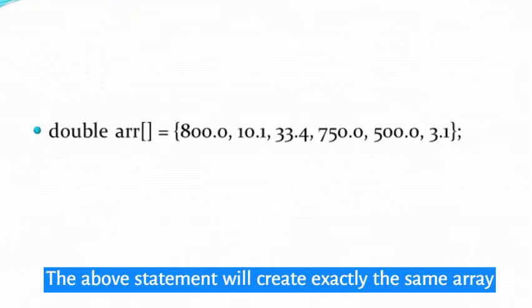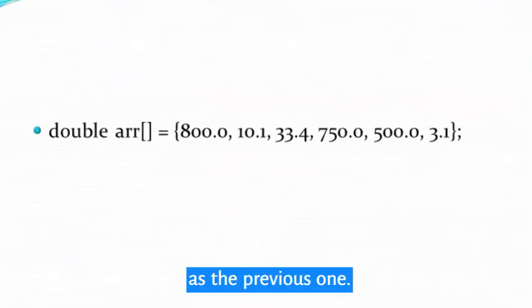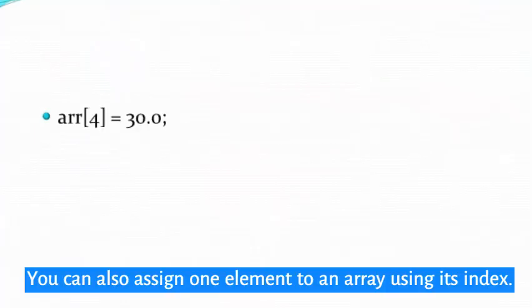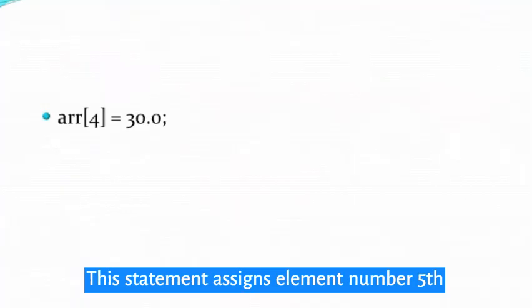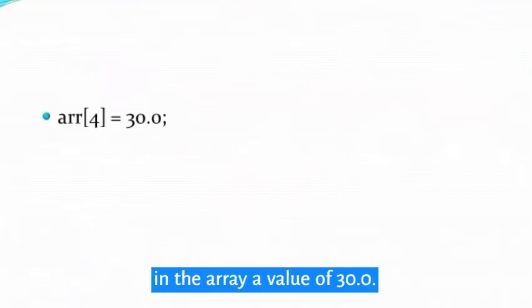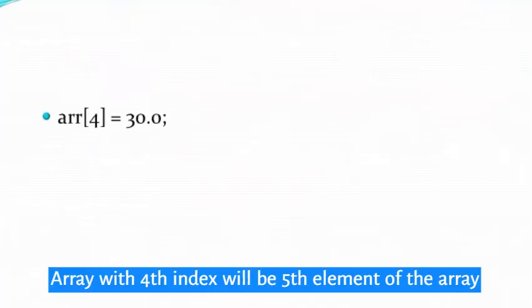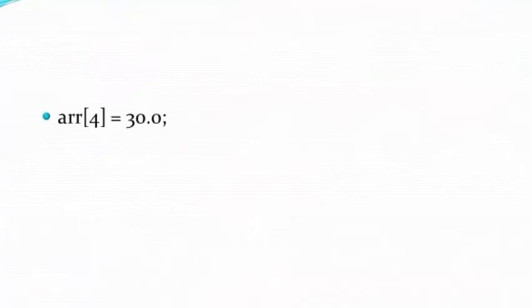The above statement will create exactly the same array as the previous one. You can also assign one element to an array using its index. This statement assigns element number fifth in the array a value of 30.0. Array with fourth index will be the fifth element.